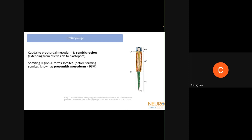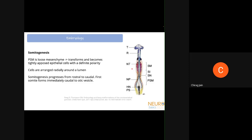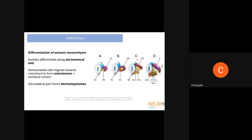Before forming somites, the pre-somatic mesoderm is a loose cellular mesenchyme without any particular structure. Somitogenesis occurs when this loose mesenchyme transforms into tightly opposed epithelial cells with definite polarity surrounding a lumen. Somitogenesis progresses from rostral to caudal — the first somite always forms immediately caudal to the otic vesicle. Once somites form, they differentiate along the dorsal-ventral axis, induced by the notochord. Cells located ventromedially migrate toward the notochord and form the sclerotome.